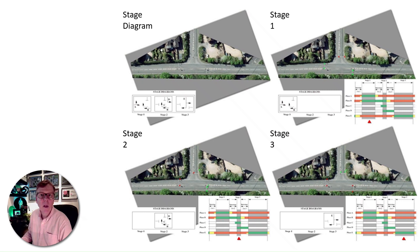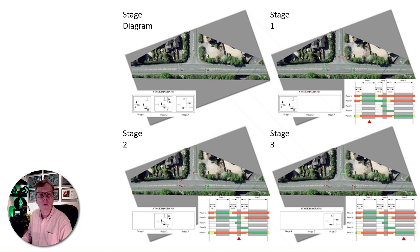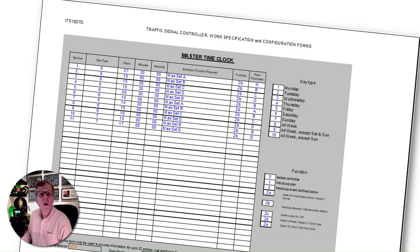Fixed time mode. Fixed time operation cycles around the program stages in a preset order. Each stage will appear for a predefined period, regardless of whether there is any demand from traffic on the relevant phases. It should be noted that modern traffic signal controllers do have a facility to make phases demand dependent within fixed time operation. This can be useful where a phase is not heavily used, such as a quiet side street approach or a pedestrian phase, which would cause unwarranted traffic congestion on opposing phases if they were to run when not required.